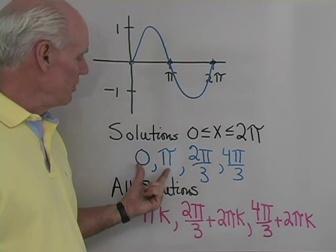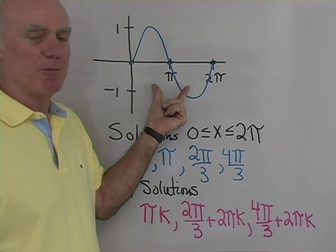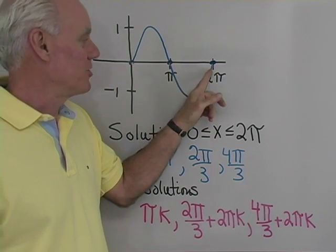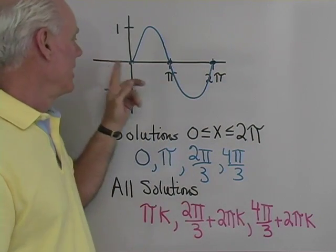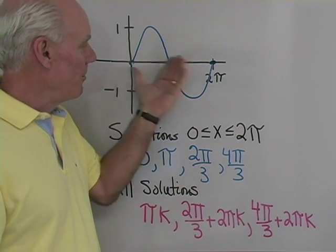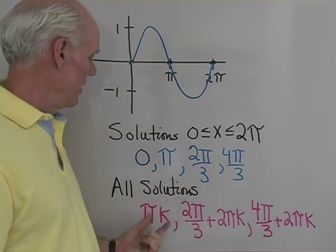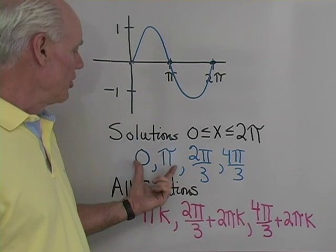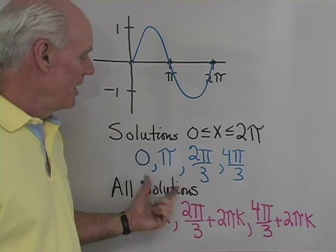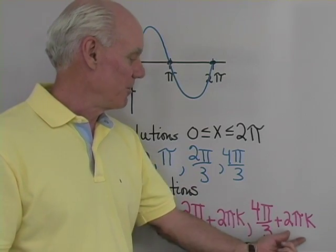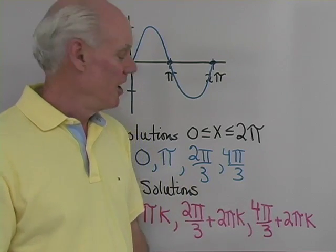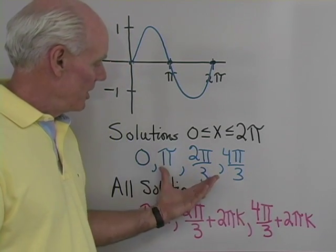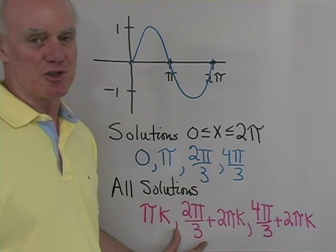Now for all solutions: from x equals 0 and pi, since sine x crosses the x-axis every pi units, we write x equals pi times k. For x equals 2 pi over 3 and 4 pi over 3, we add multiples of 2 pi: 2 pi over 3 plus 2 pi k, and 4 pi over 3 plus 2 pi k, where k is an integer. Those are all solutions to the equation.